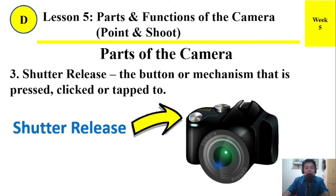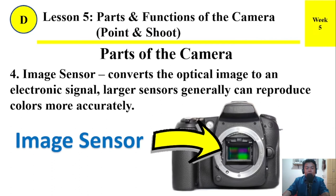Number 3: Shutter release. The button or mechanism that is pressed, clicked, or tapped to take a photo. Number 4: Image sensor. The image sensor converts the optical image to an electronic signal. Larger sensors generally can reproduce colors more accurately.